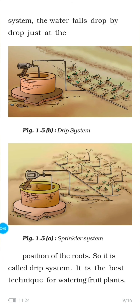Here are two modern methods of irrigation: drip system and sprinkler system. The sprinkler system is more useful on uneven land where sufficient water is not available. Water gets sprinkled on the crop as if it is raining, and it is very useful for sandy soil. In the drip system, water falls drop by drop just at the position of the roots — no water is wasted at all. It is a boon in regions where availability of water is poor.